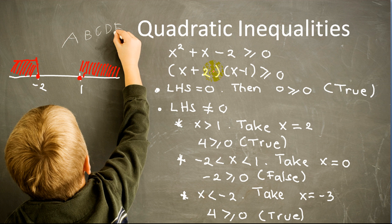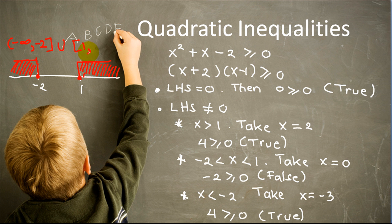So when x is less than negative 2, it is also a solution. The solution to this inequality is all x such that x is less than or equal to negative 2, or x is greater than or equal to 1. In interval notation, the solution is the interval from negative infinity up to negative 2, including negative 2 itself, union with the interval from 1 to infinity.